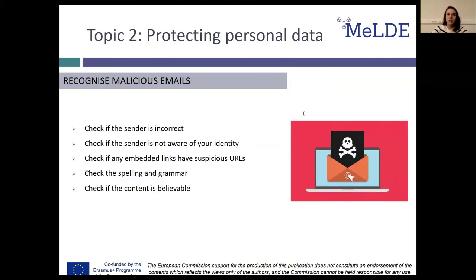Now it's time to discuss about the signs that will give a malicious email away. First, check if the sender of the email is incorrect — that means if the address doesn't match the name of the sender. Then, check if the domain of the sender's company is correct. In order to be able to check this, your email client must display the sender's email address and not just their name. Afterwards, check if the sender is not aware of your identity. If the sender doesn't address you in a way that you would expect, he probably isn't aware of who you are. For example, your bank would normally address you with your full name in an email, not just a generic way, for example, 'dear customer.'